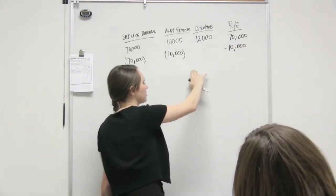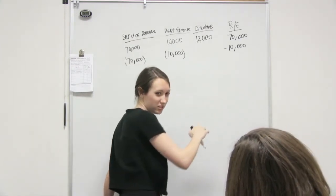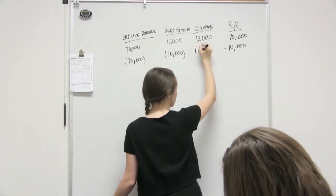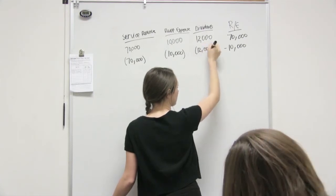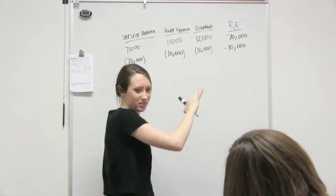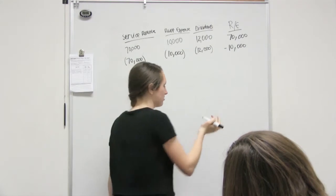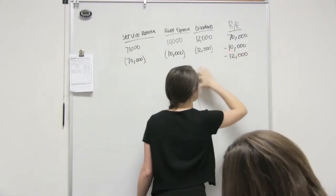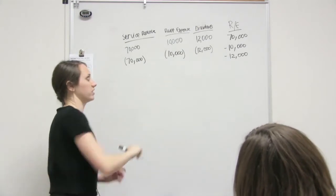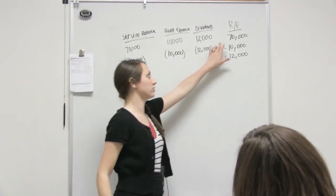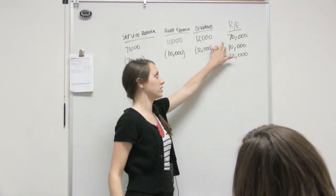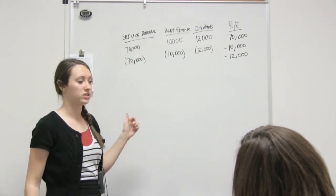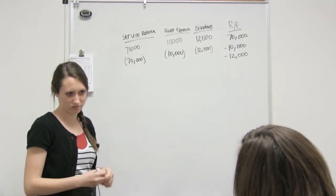So like your rent expense, you'll subtract it from retained earnings. And your dividends you'll also subtract. But your revenue will positively affect it — that's how it happens. You just move all those amounts into your retained earnings, and remember that revenue is gonna increase it while expenses and dividends will decrease it when you move it.